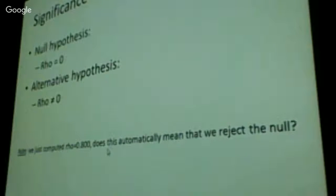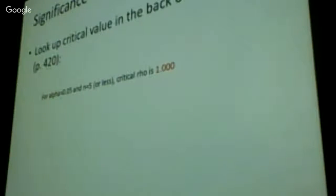So this is actually a pointless exercise. But we're going to do it anyway. It's to show you that we can do it. But, again, it's pointless. So we just computed a rho of 0.8. Does it automatically mean we reject the null? Conceptually, probably. That's such a high number. I wouldn't even bother doing this nonsense. That's a high number. Yeah, something's going on here.